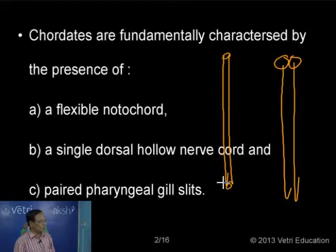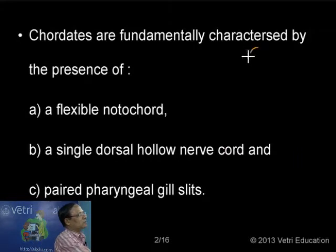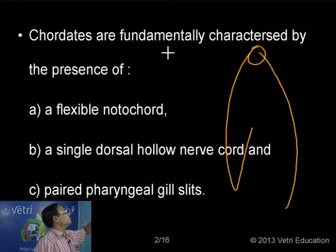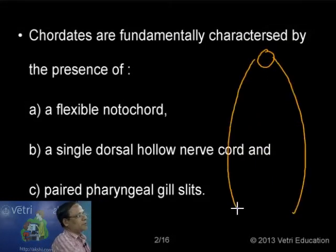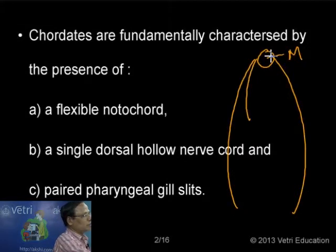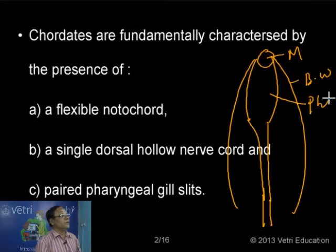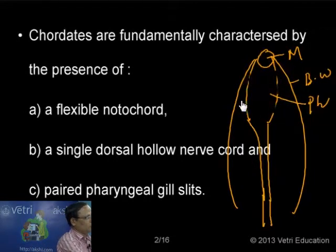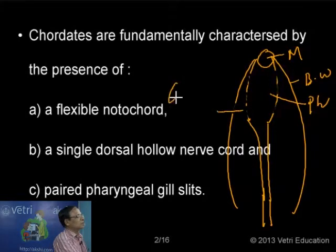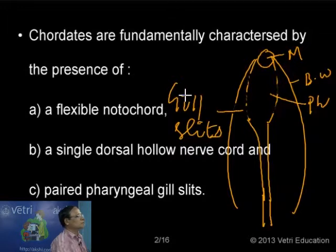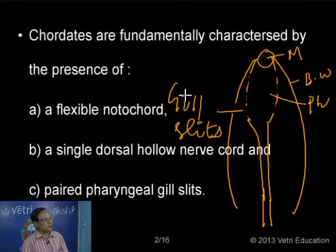The third characteristic is pharyngeal gill slits. What do we mean by pharyngeal gill slits? In the case of chordates, if we take an embryonic organism, the mouth leads into a pharynx, the pharynx is followed by the esophagus, and then the intestine. The wall of the pharynx is actually perforated with a number of openings, and these openings are called gill slits. The openings found in the wall of the pharynx are called gill slits - they are the openings, not the gills themselves.